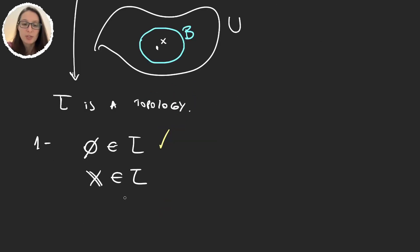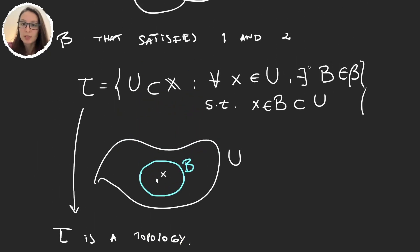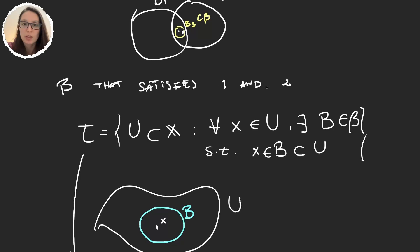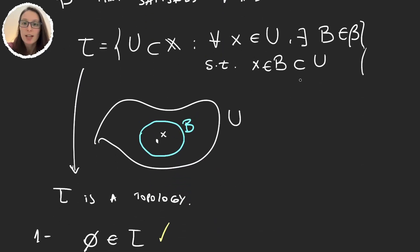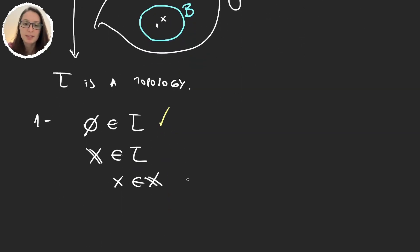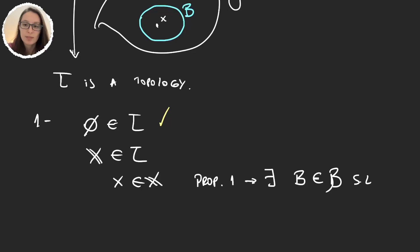Is X in our topology? Let's take some element x in X and prove there exists some B in our basis such that x is in B and B is contained in X. Since B satisfies property one, for each x in X there exists B that contains x, and it is obviously contained in X. So given x in X, property one gives us B in the basis such that x ∈ B ⊆ X. Thus X is in our topology.